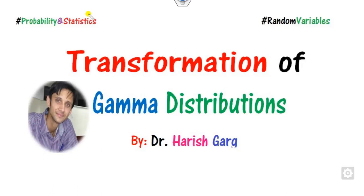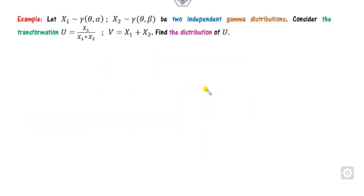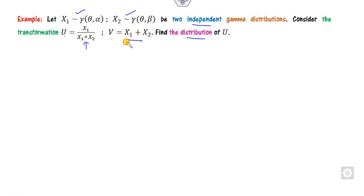Hello everyone, welcome to the next lecture on probability and statistics. Today we will discuss the transformation of the gamma distribution. If you have two variables x1 and x2 which are independent gamma distributions, what is the distribution of the transformation u and v? What is the distribution of u, and similarly what is the distribution of v?